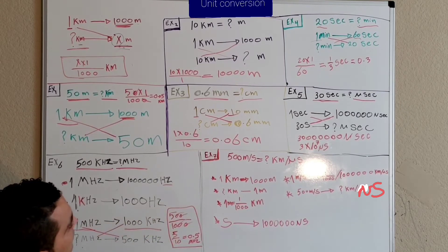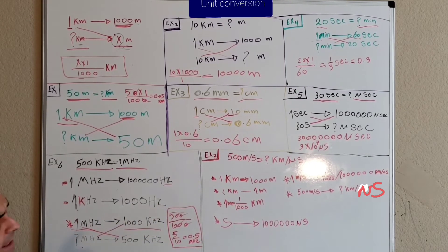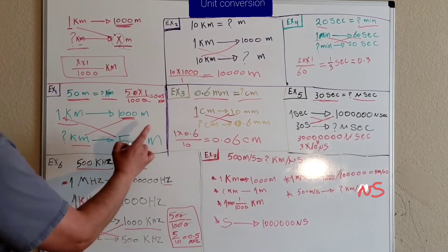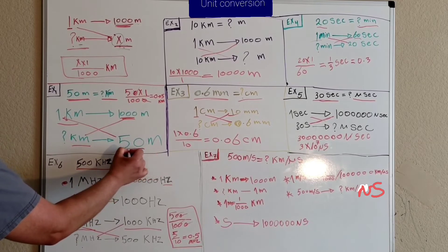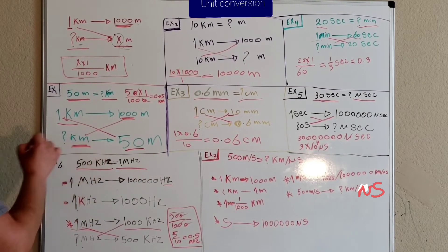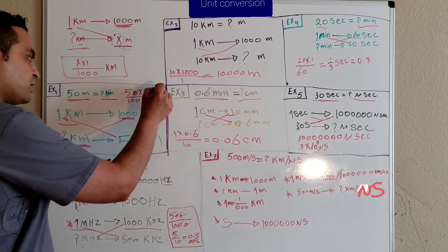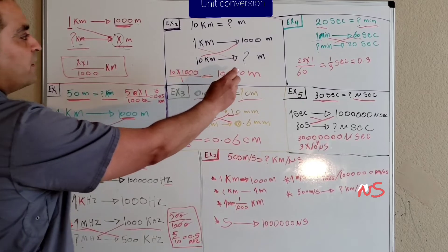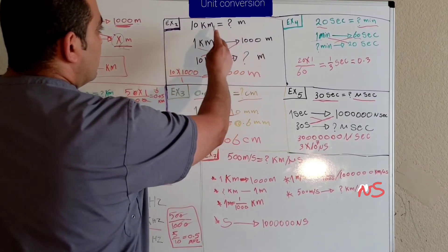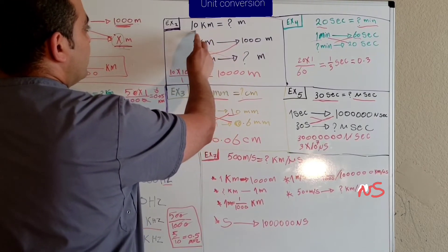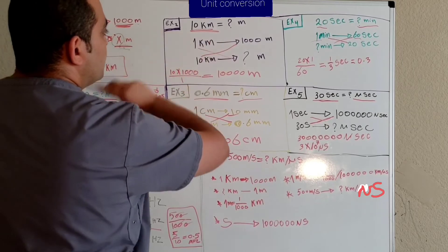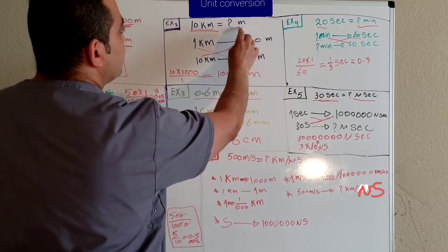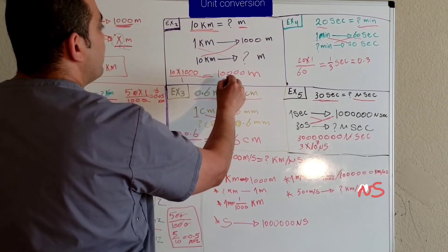We can conclude that when we convert a small unit to a big unit, the number becomes smaller. And when we convert a big unit to a small unit, the number becomes bigger.